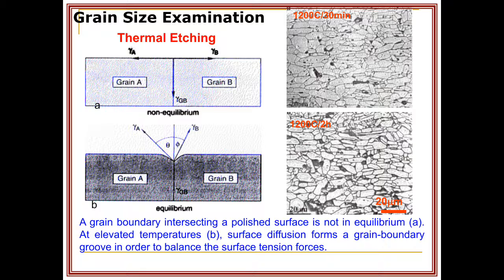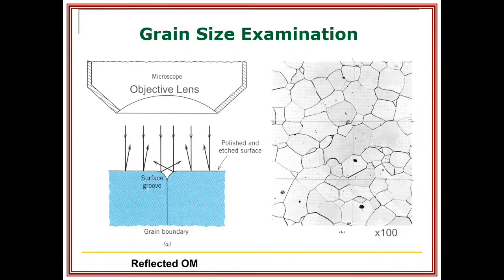There are different methods for the measurement of grain size that will be discussed at the end of this unit: the comparison method, line intercept method, and area method. Under the optical microscope, the grain boundaries appear as dark lines because the etching forms a valley at the grain boundary, causing variations in light reflection.